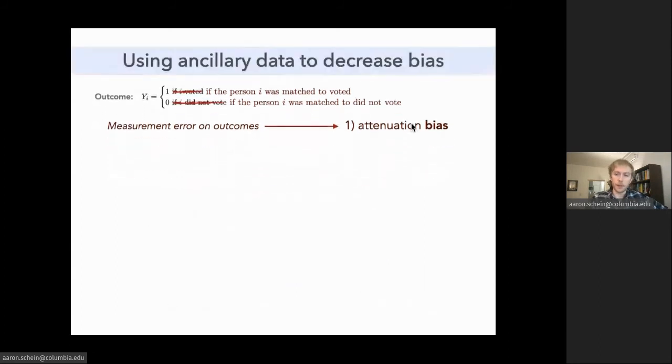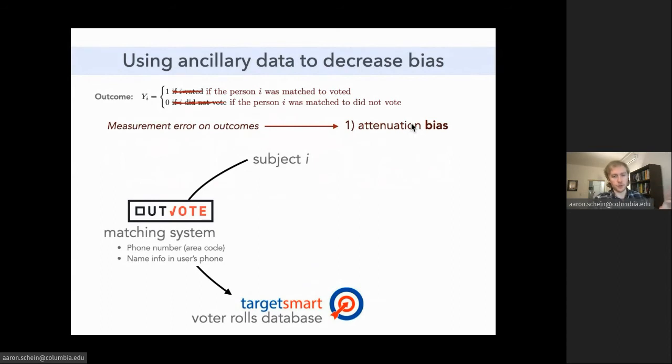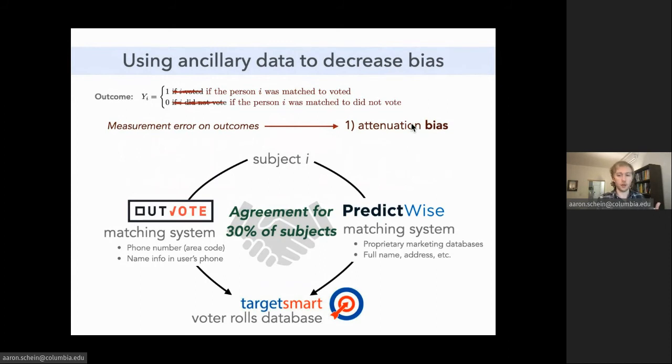To deal with the first problem, Outvote matched subjects to the voter file using a simple matching system, using basically just the phone number and the name information that was stored in the user's phone. We obtained some data from PredictWise, which has access to a much richer sources of data, including proprietary marketing databases, that are very useful for matching subjects to the voter file. We found that these two different matching systems agreed for about 30% of subjects. So 30% of subjects were matched to the same file in the TargetSmart voter file by both matching systems. So we assume that this subset of subjects has much lower measurement error than the others. And we refine our analysis to these 30%.